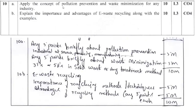Question number 10a: Apply the concept of pollution prevention and waste minimization for any industry. Give any three points briefly about pollution prevention — 5 marks. Then cover industrial sources, processing, manufacturing, etc. Any five points briefly about waste minimization. You can explain it in the context of solid waste management. Total 10 marks.